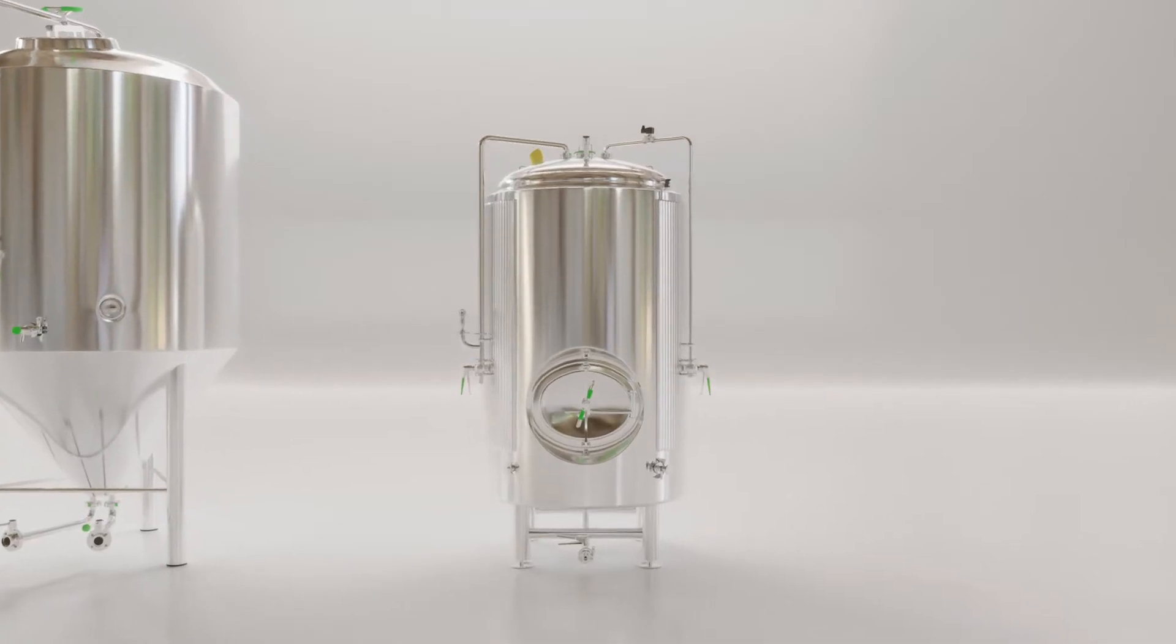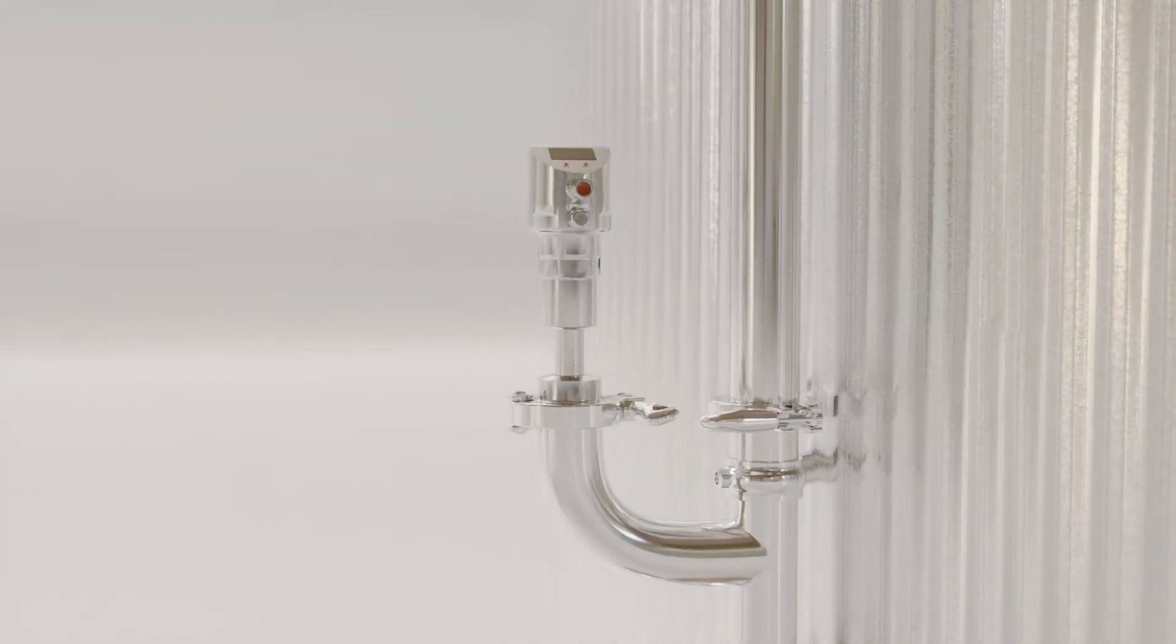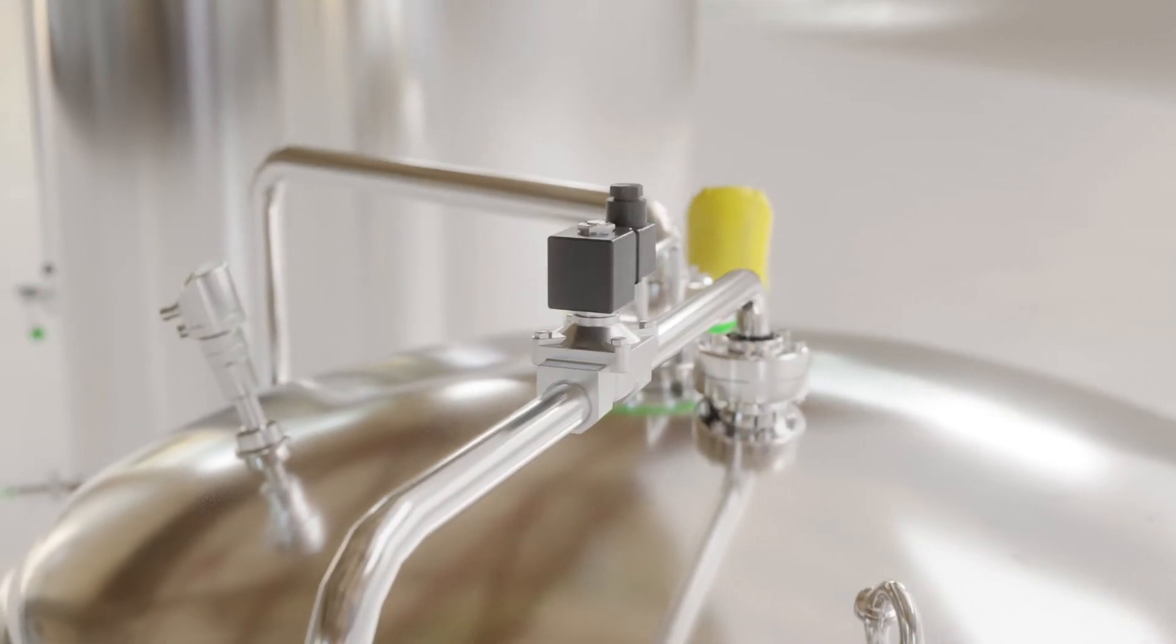The bright tank has pretty much all of that too, plus a radar level sensor, two pressure sensors, and a carbonation stone with a solenoid valve.